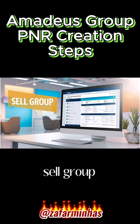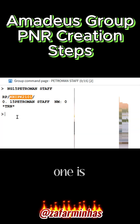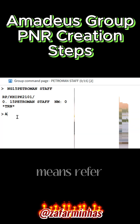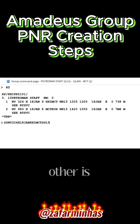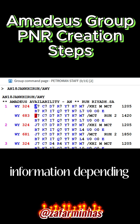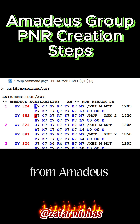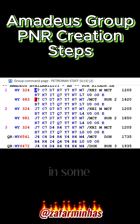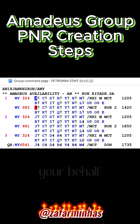Step 2: Sell Group. We have two options to sell a group. One is short sell, which refers to the displayed availability, and the other is long sell. Depending on the airline, you might not be able to sell group segments from Amadeus availability. In some cases, the airline will need to create the group PNR on your behalf.